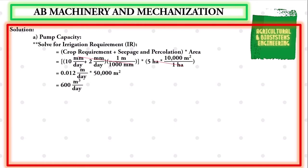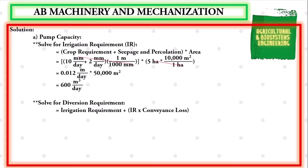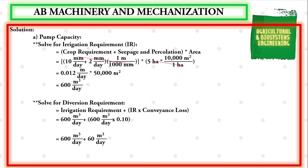Next, we solve for the diversion requirement. The formula is: diversion requirement = irrigation requirement + (irrigation requirement × conveyance loss). Substituting: 600 m³/day + (600 m³/day × 0.10) = 600 m³/day + 60 m³/day = 660 cubic meters per day.